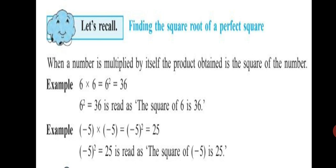When a number is multiplied by itself, the product obtained is the square of the number. For example, 6 multiplied by 6 is equal to 6 squared, which equals 36. Also, minus 5 multiplied by minus 5 equals 25. So to find the square of a number, we multiply the number by itself.